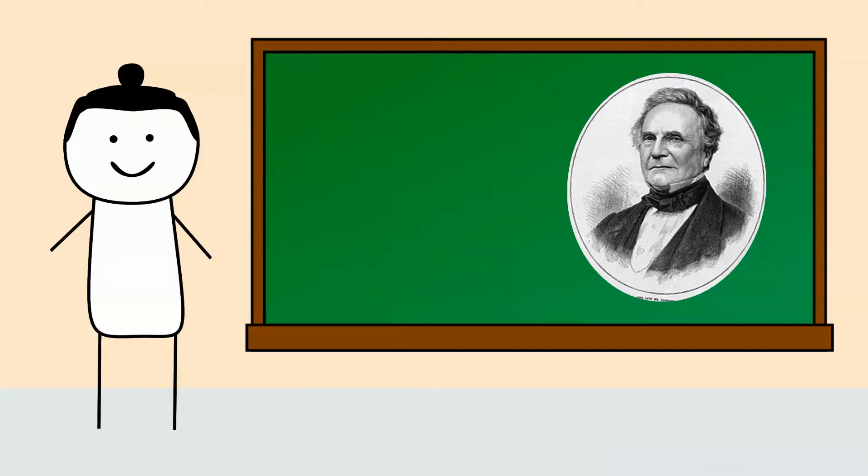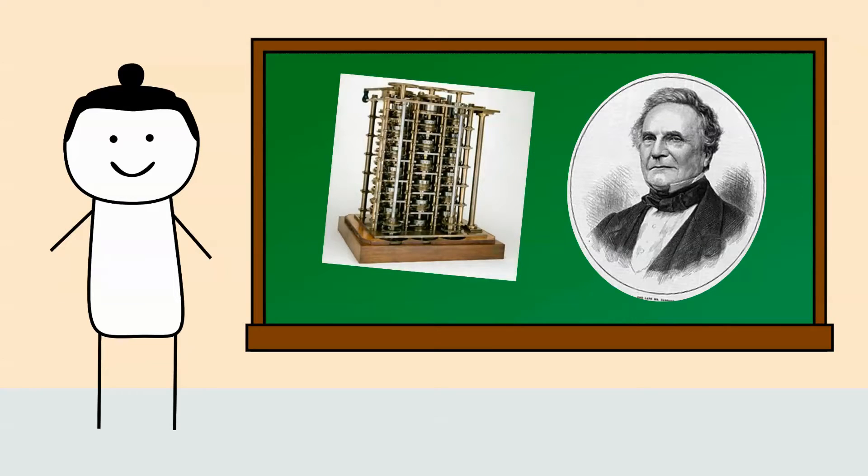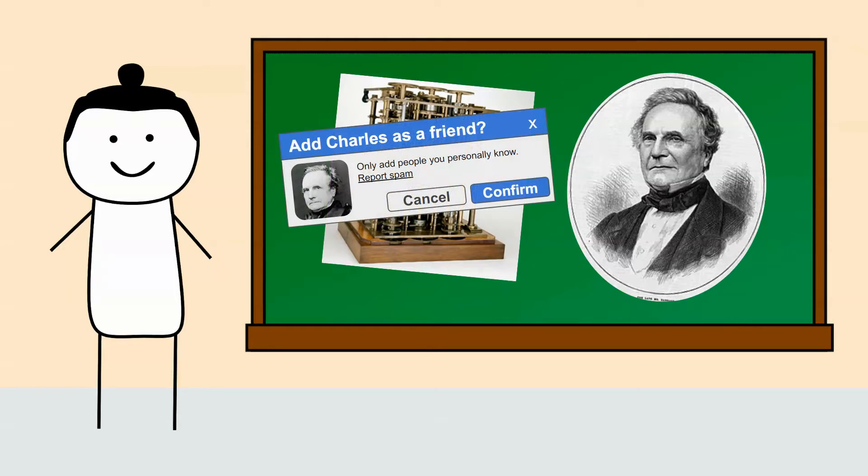When she was 17, she met Charles Babbage, a mathematician and inventor. Ada was fascinated by Babbage's ideas, and Babbage was impressed by Ada's mathematical skills, and they soon became friends.